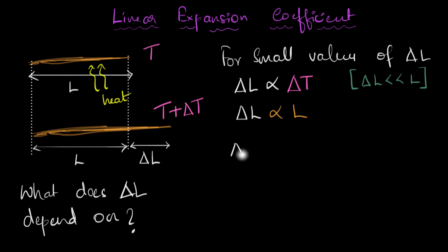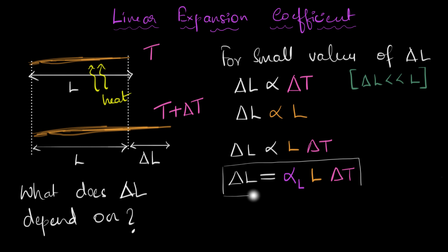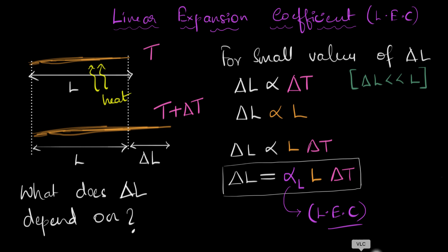If we put these two together, we can say delta L is proportional to L times delta T. We replace the proportionality with an equals sign by introducing a constant, which we'll call alpha L. So the formula is: delta L equals alpha L times L times delta T. This constant alpha L is what we call the linear expansion coefficient.